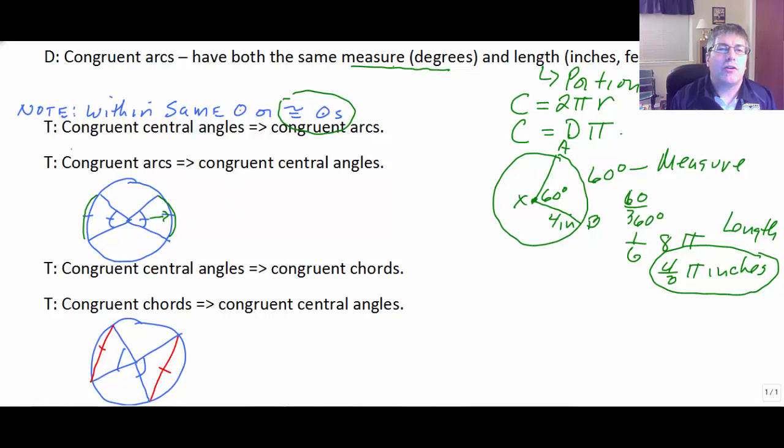Well, the converse is also true. If I've got congruent arcs, then going back, my central angles are congruent. So, congruent central angles imply congruent arcs, and conversely, congruent arcs imply congruent central angles.